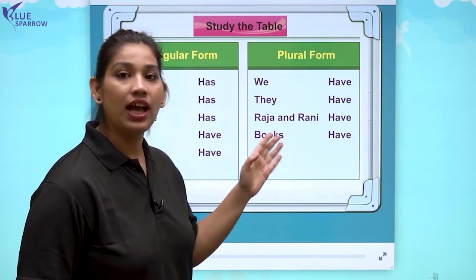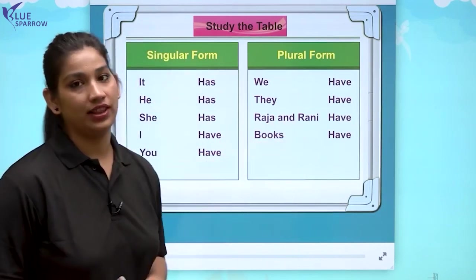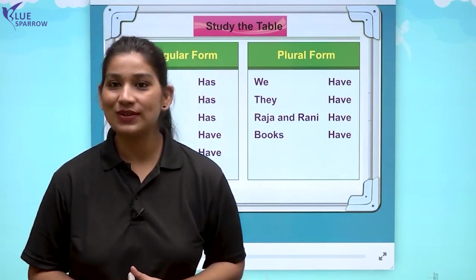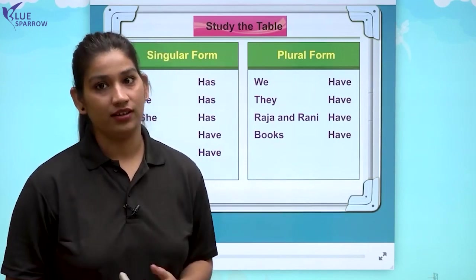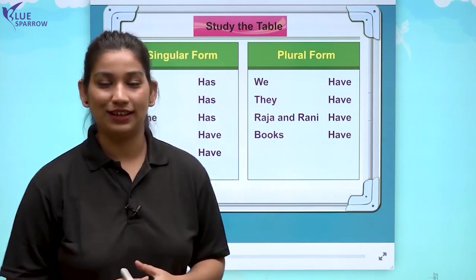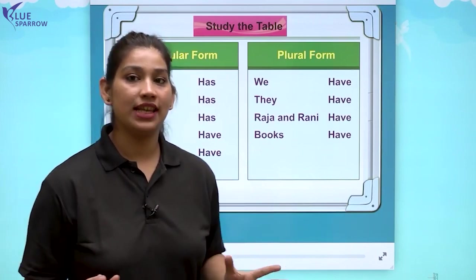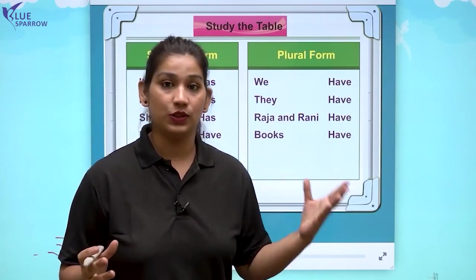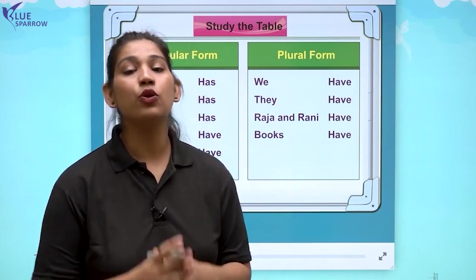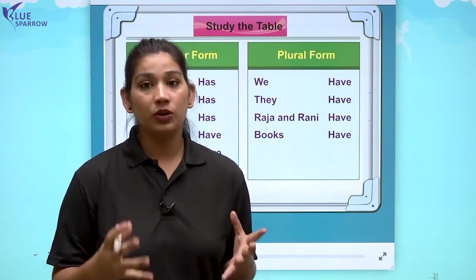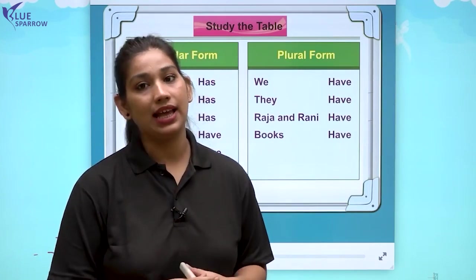Raja and Rani are two persons, so we use have with that — more than one hai, isliye have use kiya. Next is books — books are also more than one. Book matlab one, books matlab bohut saari. Jab bohut saari cheezein hongi tab hum have ka use kareenge. This was the sure-shot concept for has and have: has is used with singular, have is used with plural. Has and have are used to show possessions — possessions matlab koi bhi cheez agar meri hai, uski hai, kisi aur ki hai, yeh sab batane ke liye hum has ya have ka use karte hai.